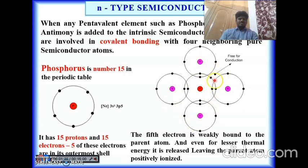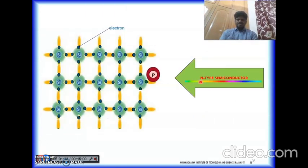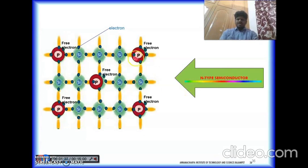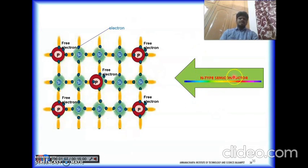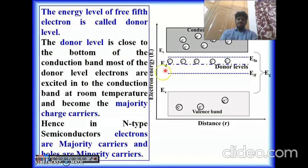Due to the free electrons from phosphorus after doping, the combined electronic energy levels of these free electrons form an energy level near the conduction band — this is called the donor level. When a small amount of energy is given, electrons jump from the donor level to the conduction band, leaving holes in the donor level. Some electrons also jump from the valence band to the conduction band. Overall, the majority charge carriers are electrons and minority charge carriers are holes.